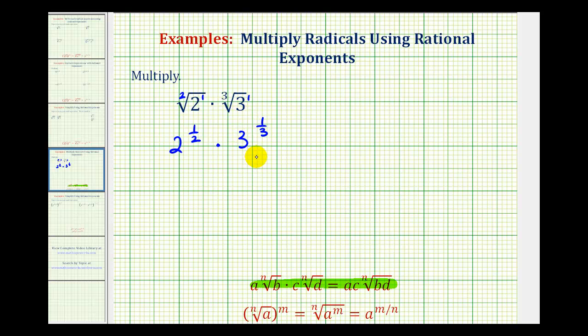We need to be careful here. We cannot multiply because notice the bases are not the same. However, if we look at the fractional exponents, if we were to obtain a common denominator for one-half and one-third, this would be the same as finding a common index. And for one-half and one-third, the least common denominator would be six.